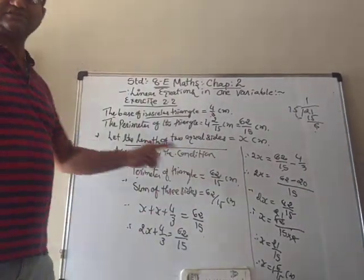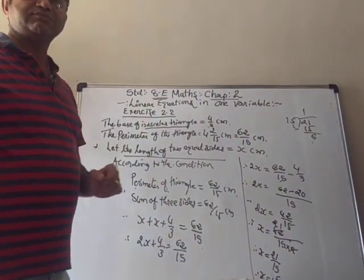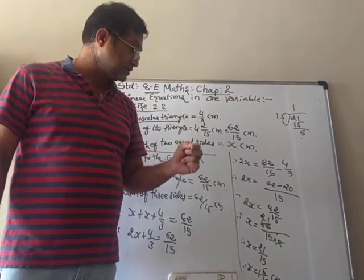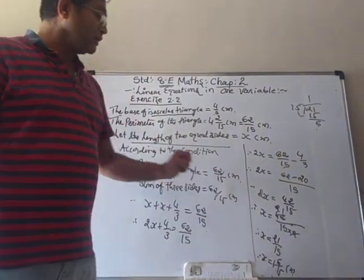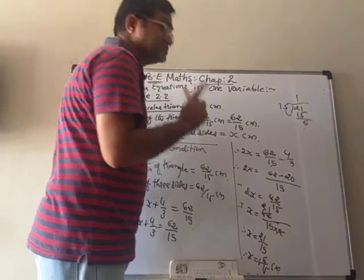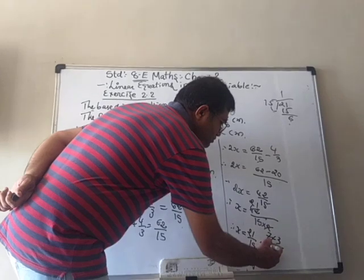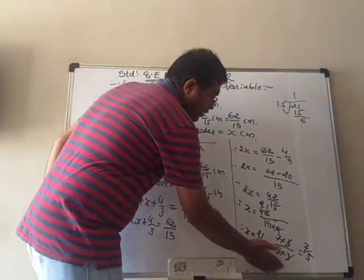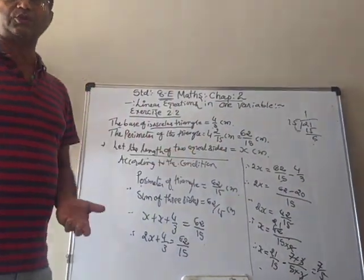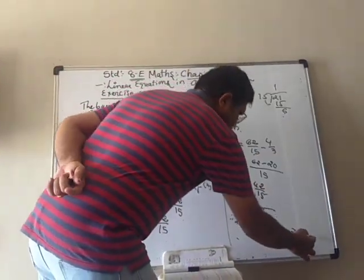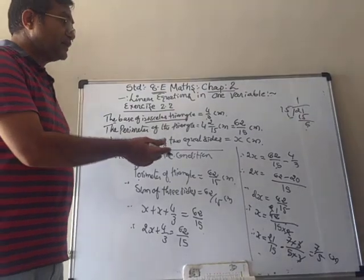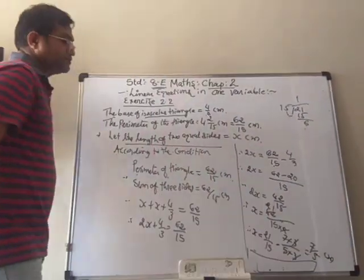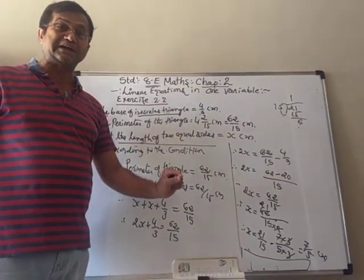So the answer is: the length of the two equal sides is 1 and 6/15 cm each. You can also simplify: 7 threes are 21, 5 threes are 15, cancel the 3, and you get 7/5. So you can write the final answer as the length of both equal sides is 7/5 cm each.